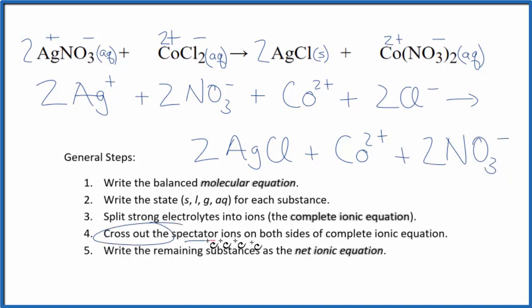So now we can cross out spectator ions. They're on both sides of our complete ionic equation. So as I'm looking, I see two nitrates here, two nitrate ions in the reactants, two in the products. Cross them out. I have a cobalt ion here and a cobalt ion here. Let's cross those out.